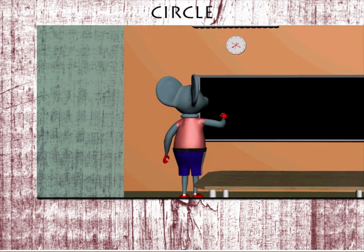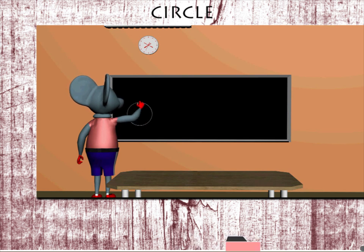Circle. Robbie Mouse draws a perfect circle on the board.